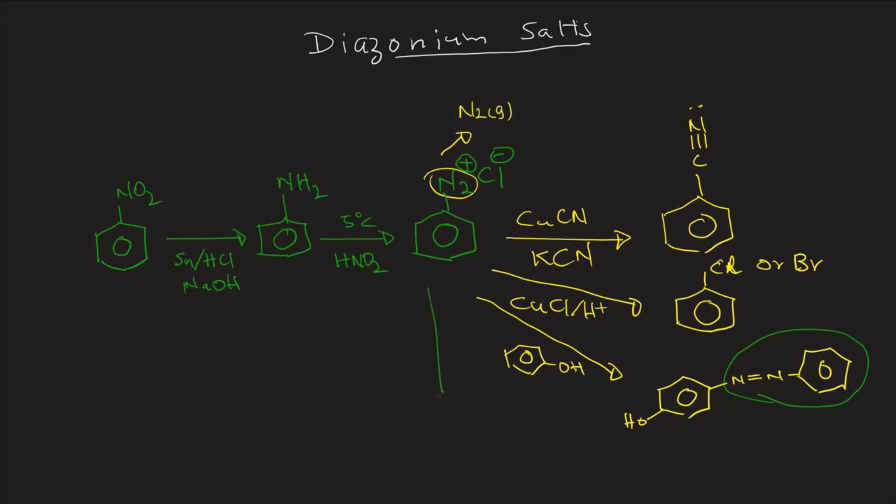Now let's see some other reactions. So the yellow ones are basically reactions performed by diazonium chloride. The green ones I'm going for synthesis of diazonium.